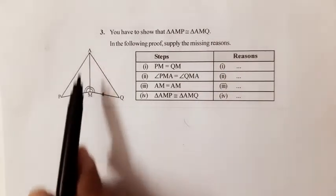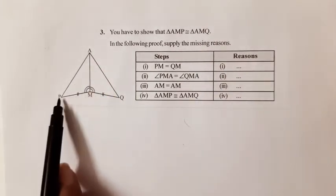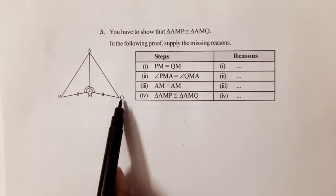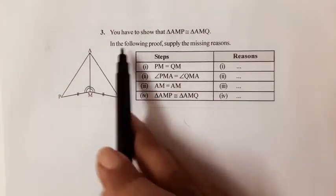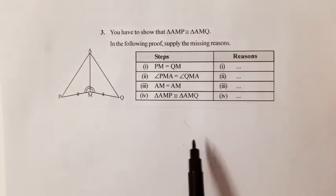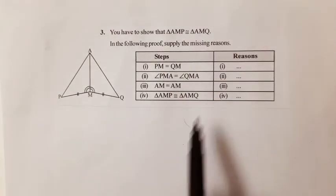The figure has been given here. Triangle AMP, triangle AMQ. In the following proof, supply the missing reasons.